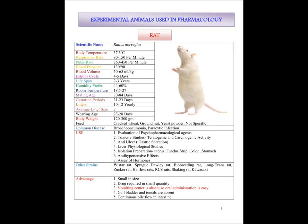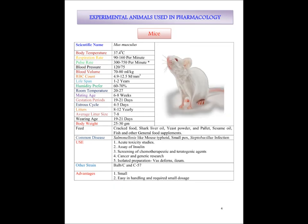Rats are also used for the assay of different types of hormones. The advantages of rat are that they are small in size, the drug required is a very small quantity, and the vomiting center is absent — this is the main point about the rat.